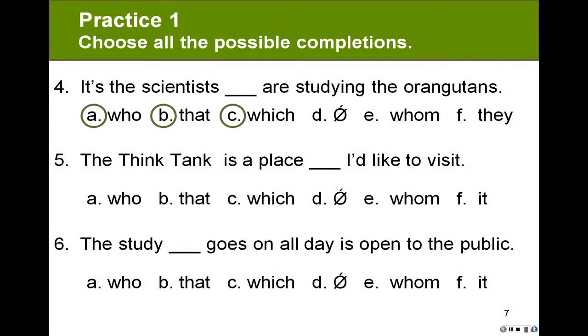A and B. Not C. I don't know why they just circled C. It should be A and B because scientists are people, and so we have the choice of A and B, and it's a subject adjective clause.